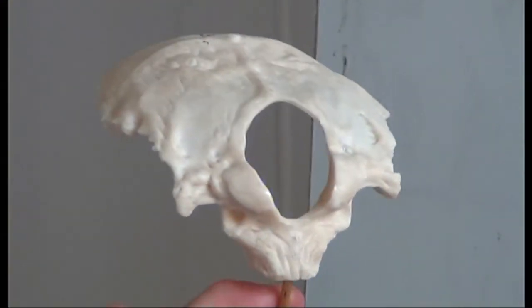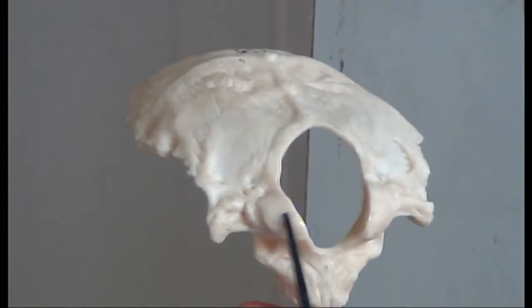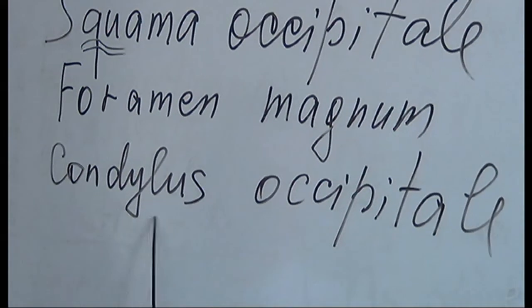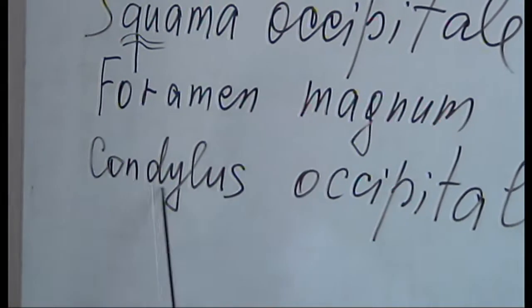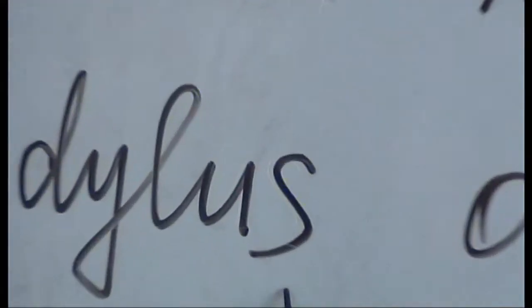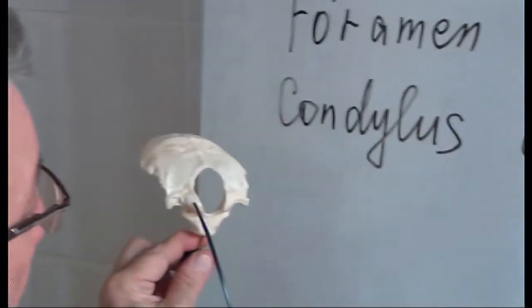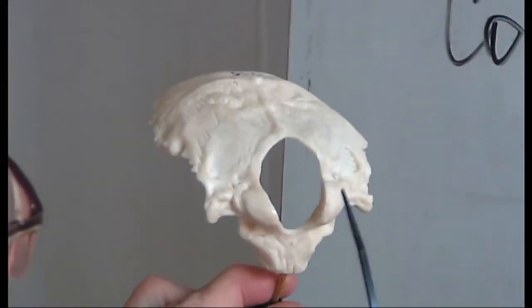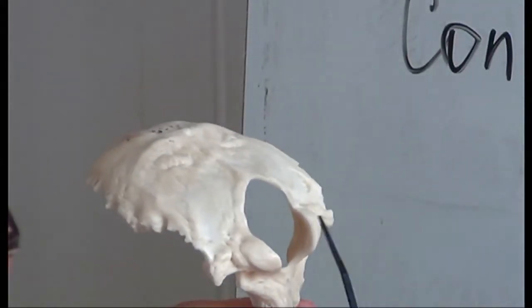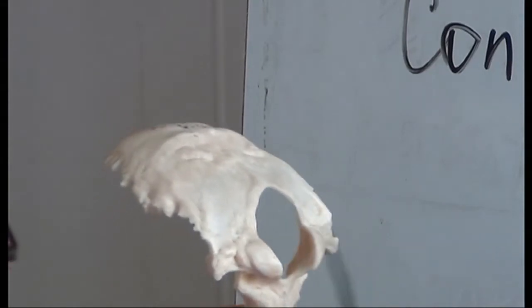If we turn to the outer surface we can find two condyli occipitales. Here they are — condyli occipitales. They serve as part of a junction.